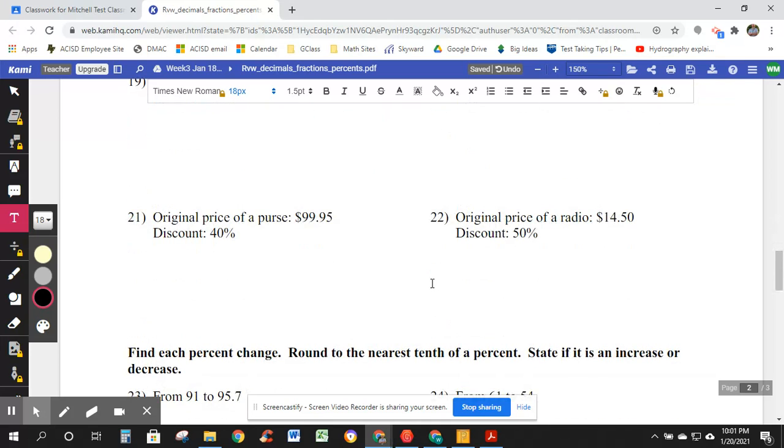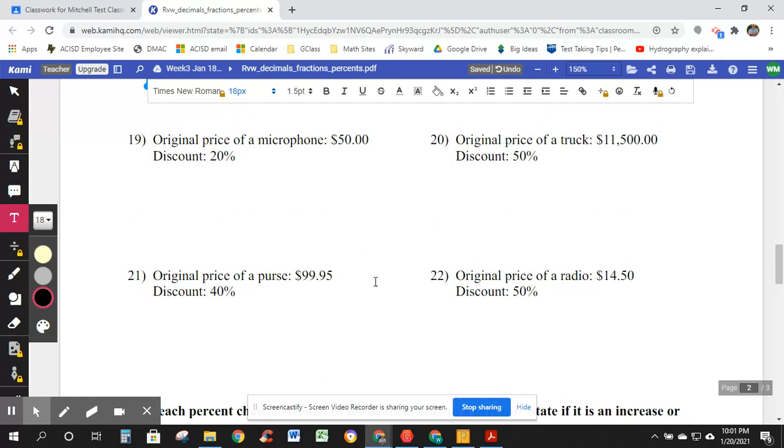30% discount is 0.3. You multiply your original price times one minus the discount, 0.7. Let's do this one more time. I'm leaving a bunch for you guys to do on this. I think you can do some of these. All right. Let's do 21 because I think it's going to illustrate this for you. 99.95 times one minus the discount as a decimal. 0.60 equals, interesting, $59.97. And we can put a dollar sign in there.